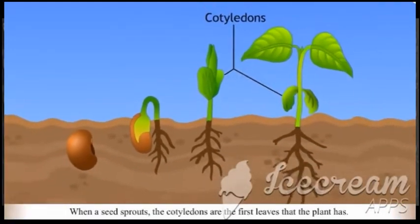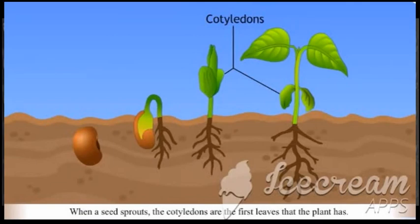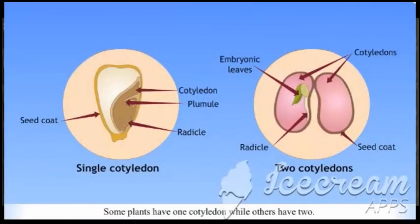When a seed sprouts, the cotyledons are the first leaves that the plant has. Some plants have one cotyledon while others have two.